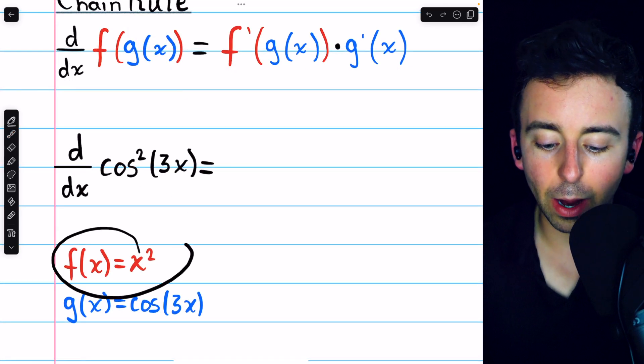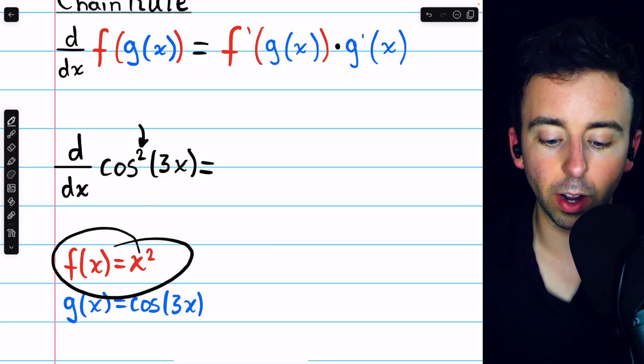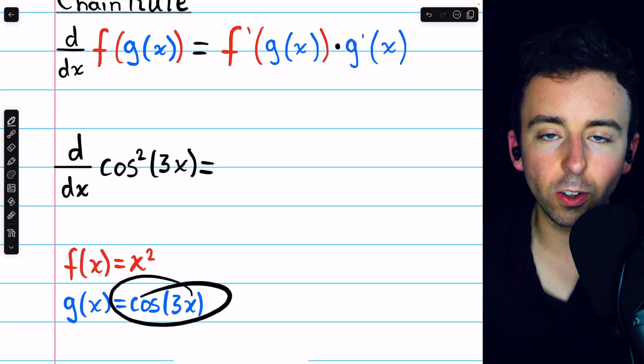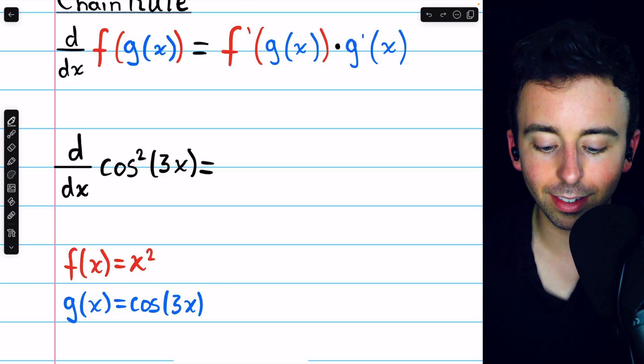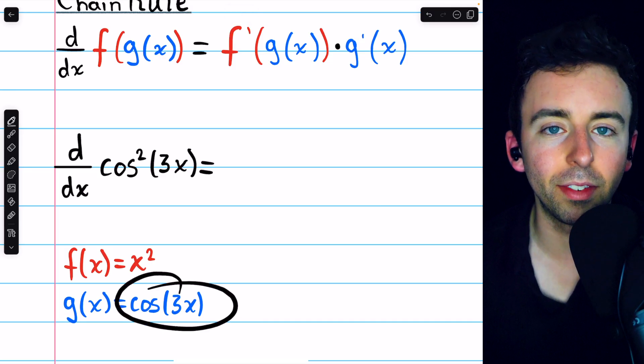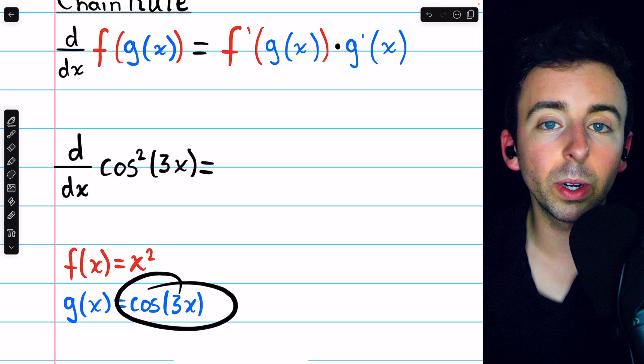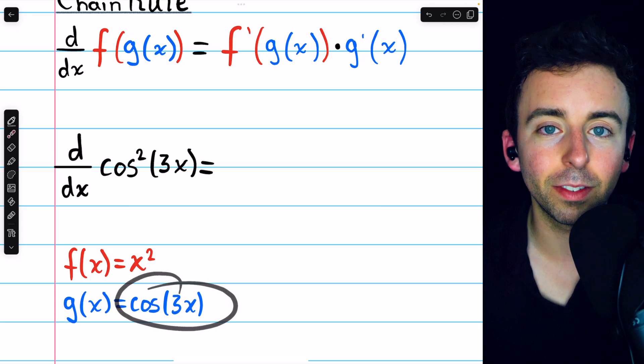In this case our outside function is x squared, it's the squaring function, and our inside function is that thing that's being squared, which is cosine of 3x. Now you may notice cosine of 3x is itself a composite function, so we're actually going to have to apply the chain rule twice here, but let's not get ahead of ourselves.